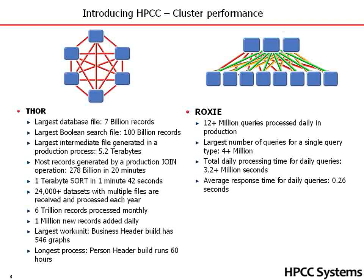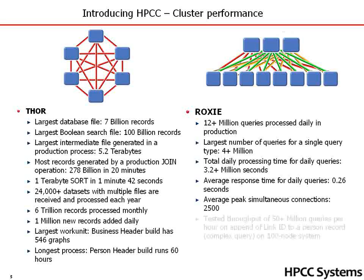The average response time for a daily query is a quarter of a second. The average peak simultaneous connection is 2,500 at any particular time. The tested throughput is over 50 million queries per hour on an append of a link ID to a person complex query on a typical 100-node Roxy system.